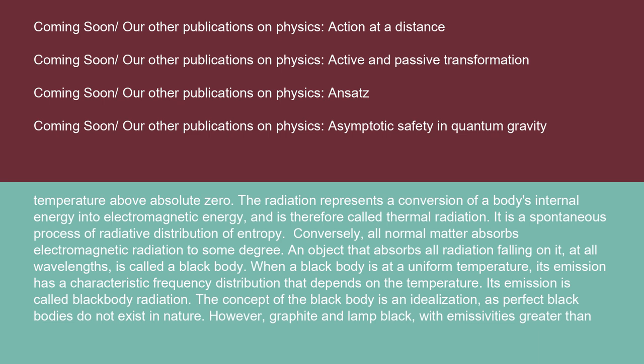Conversely, all normal matter absorbs electromagnetic radiation to some degree. An object that absorbs all radiation falling on it at all wavelengths is called a black body. When a black body is at a uniform temperature, its emission has a characteristic frequency distribution that depends on the temperature. Its emission is called black body radiation.